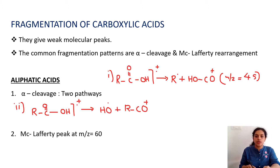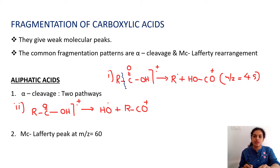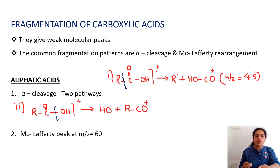In the first form, R dot is obtained — the breakage has taken place at the alpha position. R dot and OHCO+ are obtained with the m/z value 45. In the second alpha cleavage, OH is converted into OH dot, and the resulting fragment is RCO+.